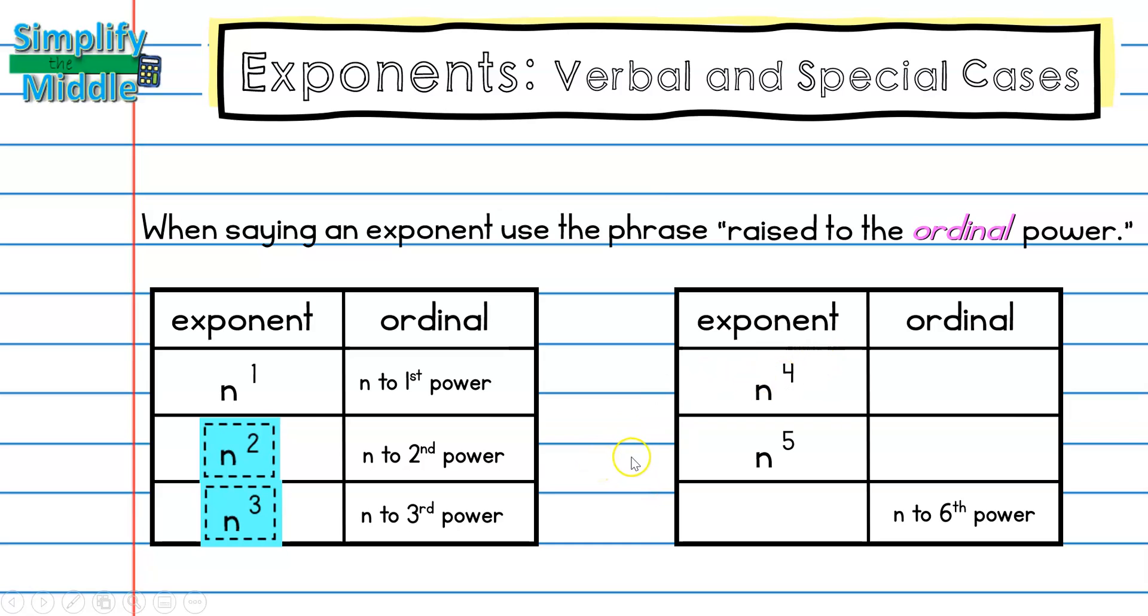I know that n to the fourth power has an exponent of 4, so the ordinal is n to the fourth power. In this one, n with an exponent of 5 is n to the fifth power. Because I have a sixth power here, I have a base of n and an exponent of 6.